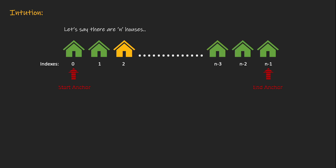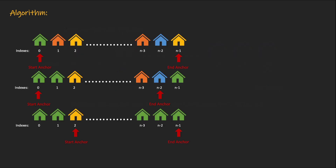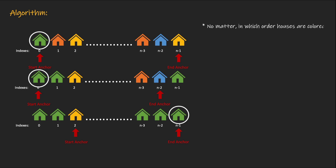Another example: we start from the edges and see that the colors are the same, so we move inwards. If we move inward from the left hand side, we encounter a yellow color house first. So we move inward from the left, and now the two houses are different colors — we return. The maximum distance would be n-1 minus 2, that is n-3. Based on these examples, we can see that in each one, one of the houses in the output is always at the edge, whether left or right. No matter how the houses are colored, one house in the solution will always be on the edge.